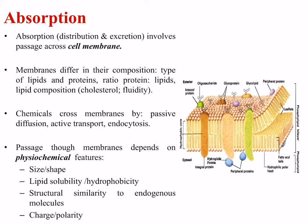What is absorption? Absorption involves the passage of material across a membrane — in this case, a cell membrane. Biological membranes differ in their composition in terms of the types of lipids and proteins, the ratio of protein and lipid, and the lipid composition such as the amount of cholesterol or phospholipid present. The diagram on the right shows a typical cell membrane with the classical phospholipid bilayer, including integral proteins, glycoproteins, glycolipids, peripheral proteins, and sugars involved in cell processes and cell-to-cell communication.